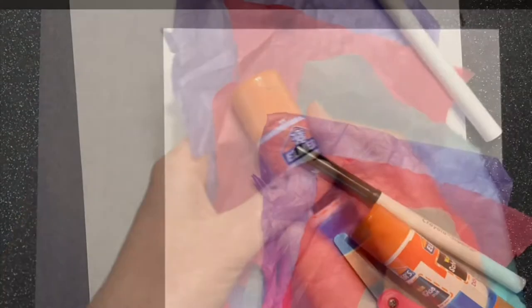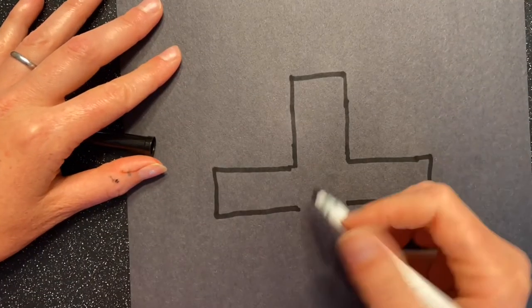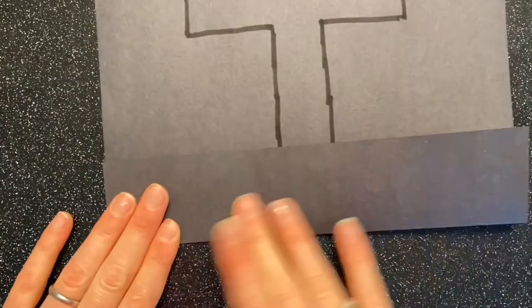Taking your black pen or marker, draw a cross on your black construction paper. Then fold the bottom part of your paper up a little bit and cut that strip off and set it aside. You'll use it in a second.